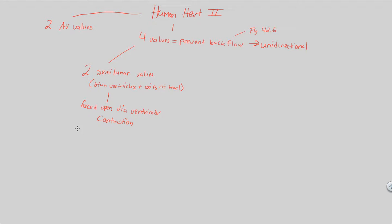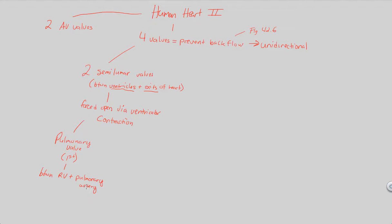The two semilunar valves are classified as the pulmonary valve and the aortic valve. The pulmonary valve opens and leads to the lungs, and it's the first to open as a result of ventricular contraction — specifically, the right ventricle contracting causes the pulmonary valve to open. It is conveniently located between the right ventricle and the pulmonary artery. Artery means going away from the heart, so blood travels from the right ventricle through the pulmonary valve into the pulmonary artery.